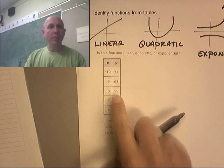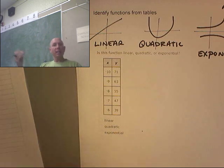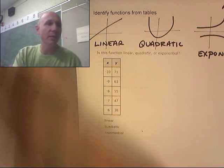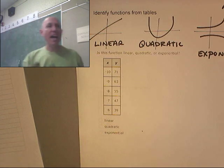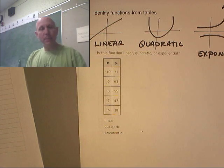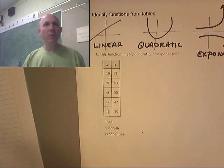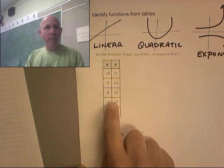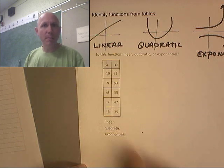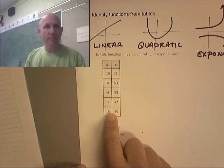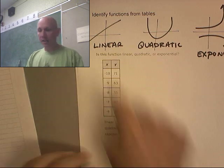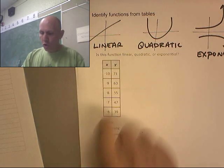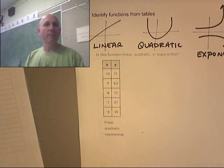So here's a table. This is a table of x's and y's. You could get out a piece of graph paper and plot these, and you could look at it and go: oh, it's a line; oh, it's a quadratic; oh, it's an exponential. So at a bare minimum, you could plot these points and look at the graph and determine what is going on.